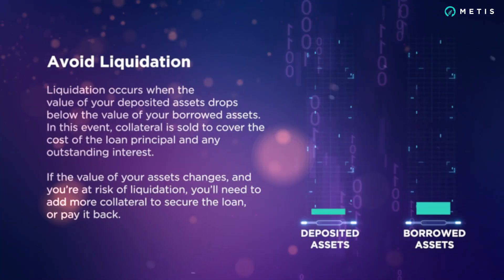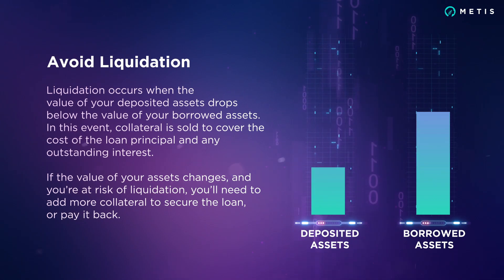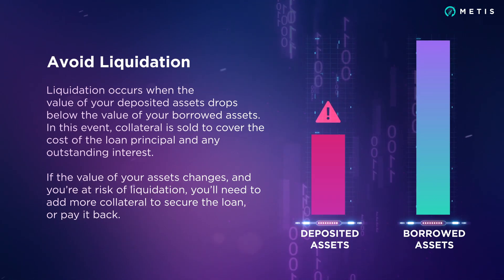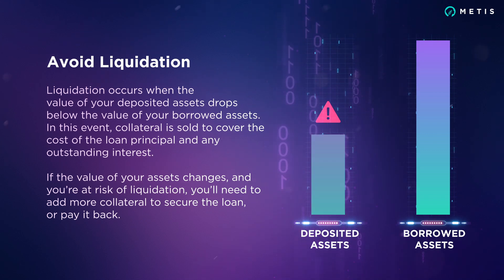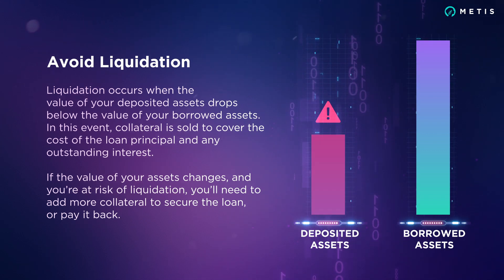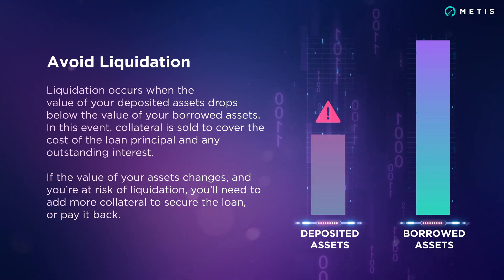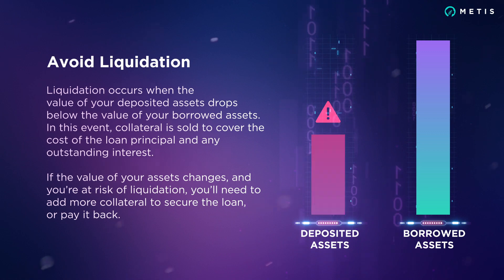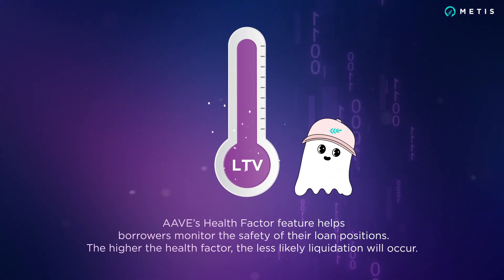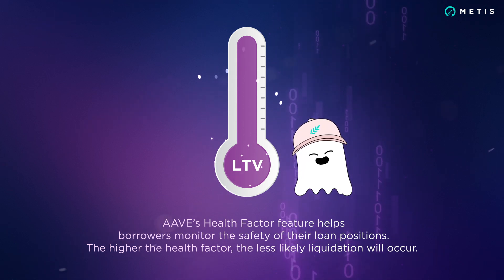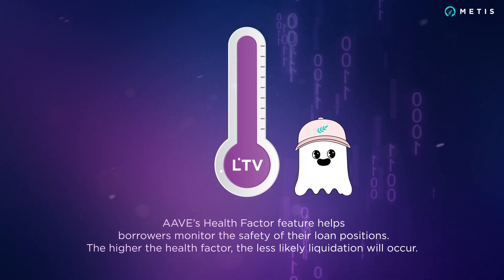Avoid liquidation: liquidation occurs when the value of your deposited assets drops below the value of your borrowed assets. In this event, collateral is sold to cover the cost of the loan principal and any outstanding interest. If the value of your assets changes and you're at risk of liquidation, you'll need to add more collateral to secure the loan or pay it back. Aave's health factor feature helps borrowers monitor the safety of their loan positions — the higher the health factor, the less likely liquidation will occur.